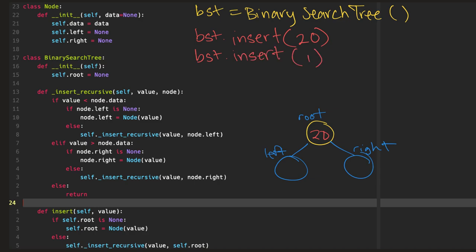Now let's say we insert another value — this time we'll insert 1. Our root is not none, so we move to the recursive insert with value 1 and pass in the root, which is 20. We check if our value 1 is less than our node, which is our root 20 — and it is, so it needs to go into our node's left node. In a binary search tree, a node's left node has to be less than the node. Since node.left is none, we just insert 1 into the left node.